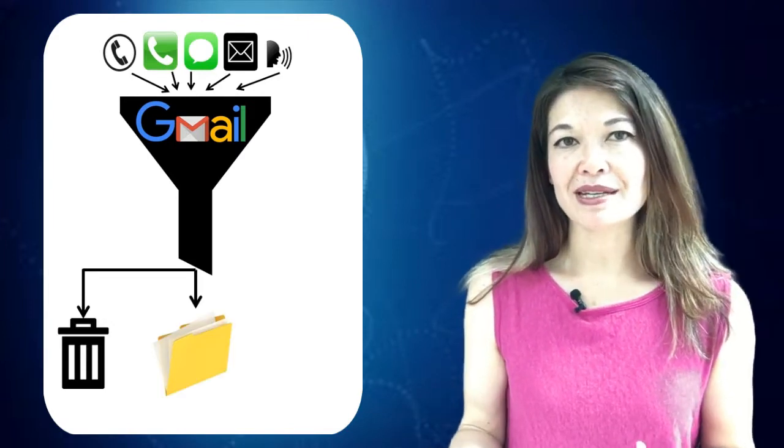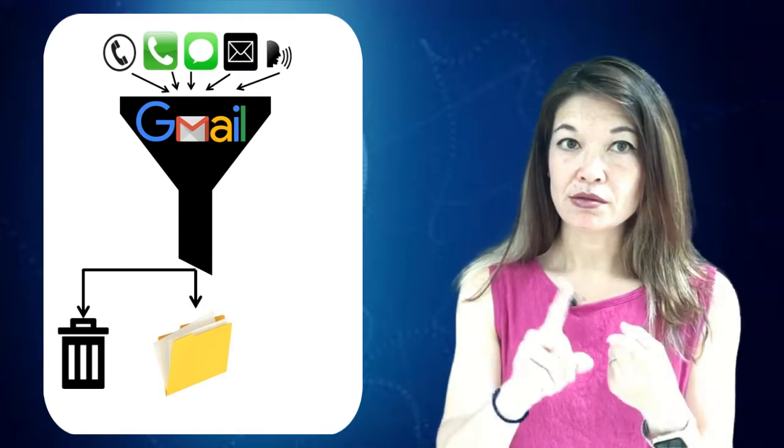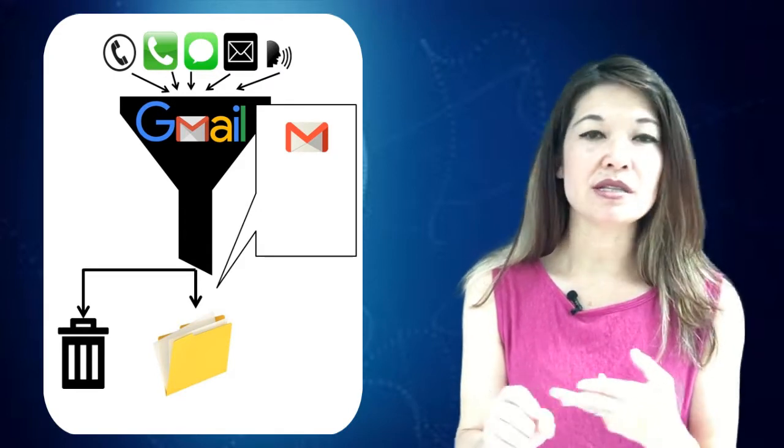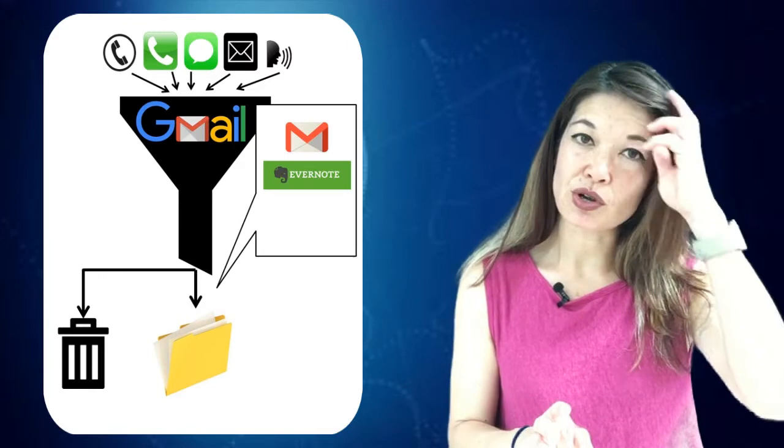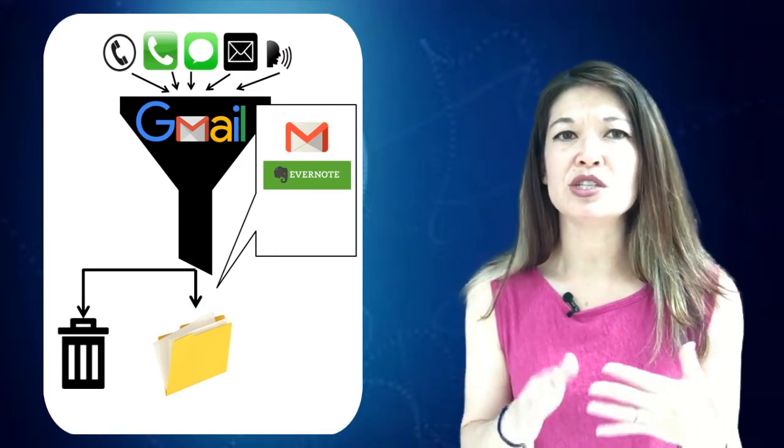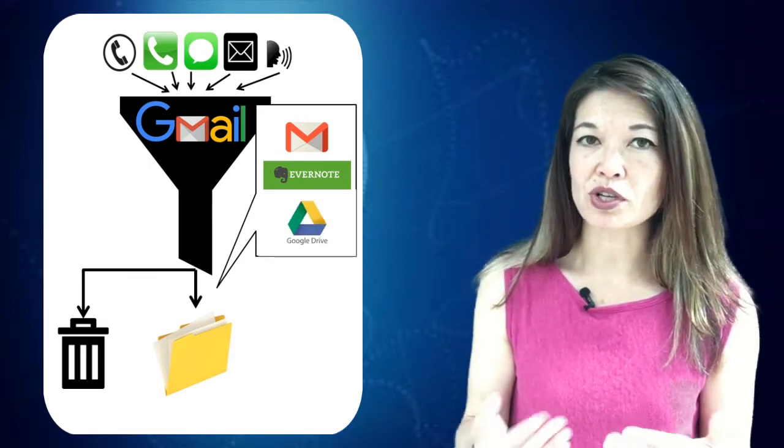File is for stuff I might need to refer to later on. I put them in one of three places: Gmail folders for email correspondence, online receipts, confirmations, etc; Evernote, which is a note-taking app, for notes, websites, pieces of information that I will need to refer to more frequently; and Google Drive for spreadsheets, PDFs, presentations, etc.